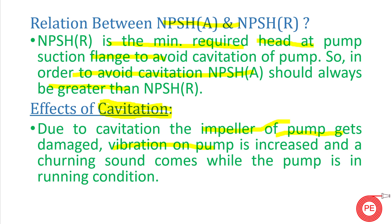Another problem caused by cavitation is increased pump vibration — the bubbles exploding at the impeller eye cause vibration. As the pump vibrates, you may lose your bearings, foundation bolts may come out, and the whole piping system may vibrate. There will always be a churning sound coming from the pump — it won't run smooth. These are all indications that your pump has a cavitation problem. The solution is to calculate NPSH available correctly and provide it to your pump manufacturer.